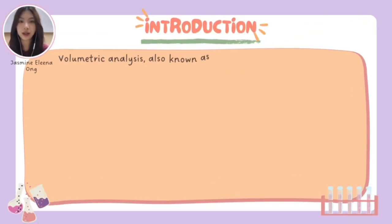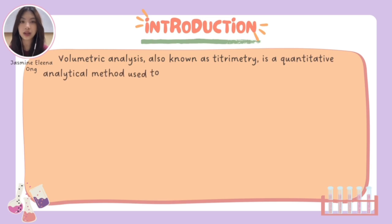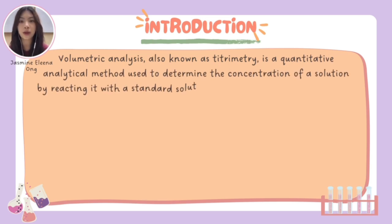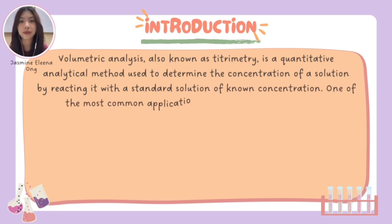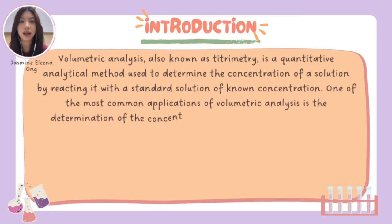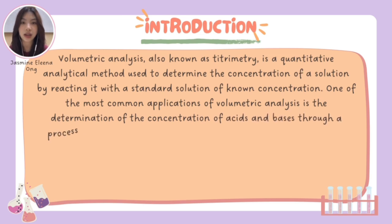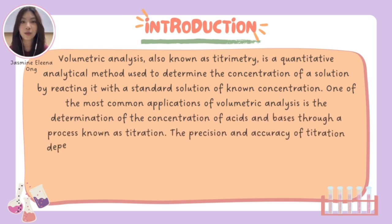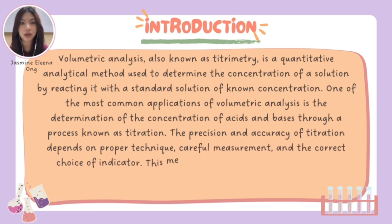I will be moving on to the introduction. Volumetric analysis, also known as titrimetry, is a quantitative analytical method used to determine the concentration of a solution by reacting it with a standard solution of known concentration. One of the most common applications is the determination of the concentration of acids and bases through a process known as titration.